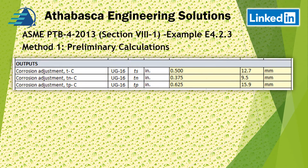We set up the preliminary calculation and make customary adjustments for the corrosion allowance, so the thickness of the parts becomes a little thinner after those adjustments. We apply the adjustments to the shell, the nozzle, and so on.